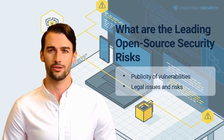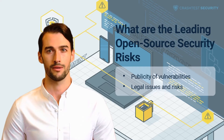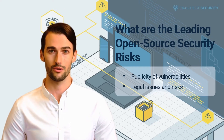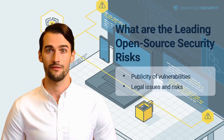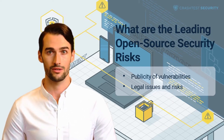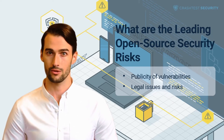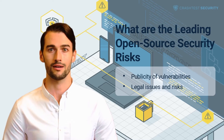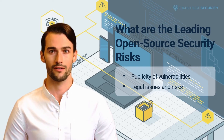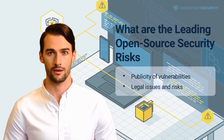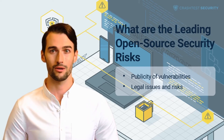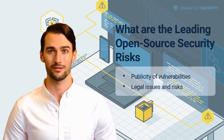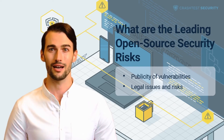Legal Issues and Risks. While the legal issues around using open-source code are not strictly speaking security vulnerabilities, they create additional difficulty around using such software. Open-source is often considered entirely free and open, but this needs to be qualified. To legally use such components, you must comply with all the license conditions they are under. There are currently over 200 different types of open-source licenses, many of which cannot be used together.